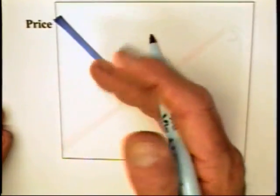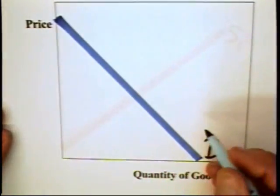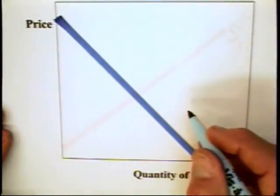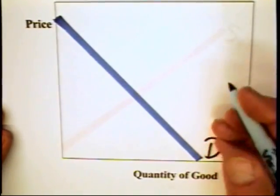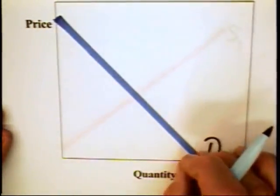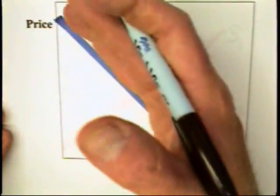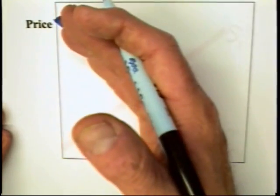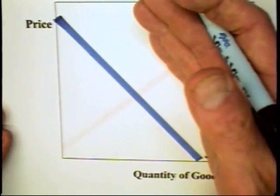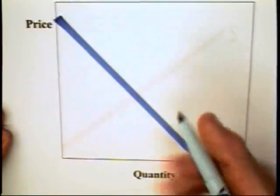Becker notes in his analysis that the demand curve is the assumed inverse relationship between price and quantity. But this curve, while drawn as a thick line for purposes of visual presentation, is really a boundary. It is a boundary between what is unacceptable to consumers and what is acceptable to consumers.